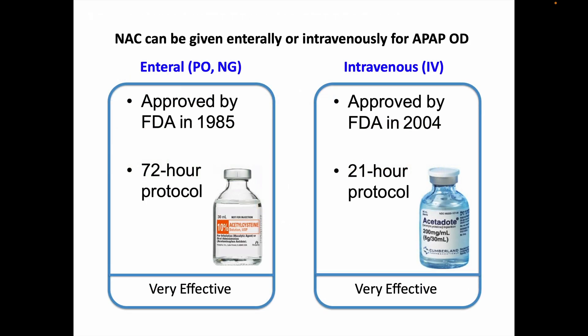NAC can be given enterally — that is, either by mouth (PO) or through a tube into the GI tract. The Food and Drug Administration approved enteral NAC in 1985, although it had been commonly used to treat acetaminophen overdose for several years by that point. NAC had also been given intravenously for some years before FDA approval, but there had been no commercial product labeled for IV use in the U.S. What typically happened in those days was to take either generic N-acetylcysteine or Mucomist, a brand-name preparation of NAC for nebulization in patients with pulmonary disease, and run it through a micropore filter before giving it IV.